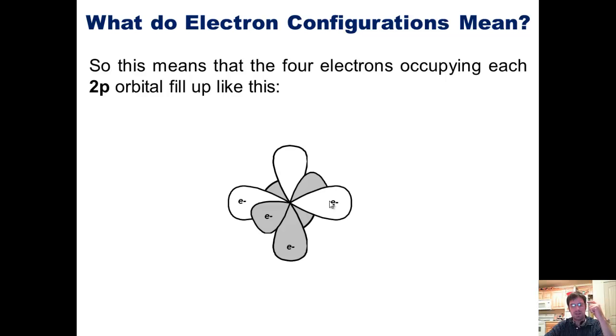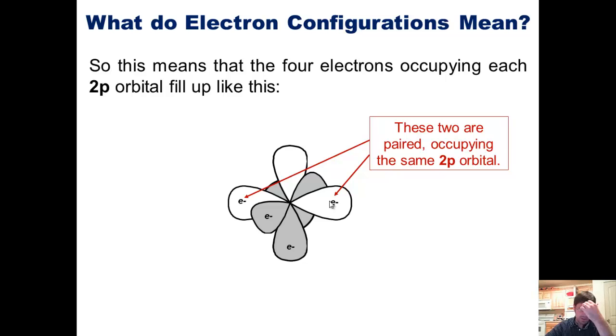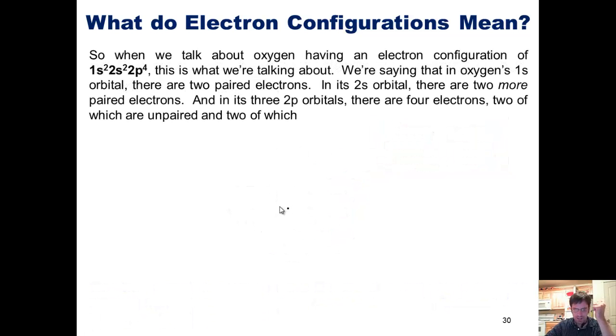Now, you should remember that the two paired electrons in the 2p orbital along the x-axis are different from each other, because one of these has a plus one-half spin, and the other has a minus one-half spin. So when we talk about oxygen having an electron configuration of 1s2, 2s2, 2p4, this is what we're talking about. We're saying that in oxygen's 1s orbital, there are two paired electrons. In its 2s orbital, there are two more paired electrons. And in its three 2p orbitals, there are four electrons, 1, 2, 3, and 4.